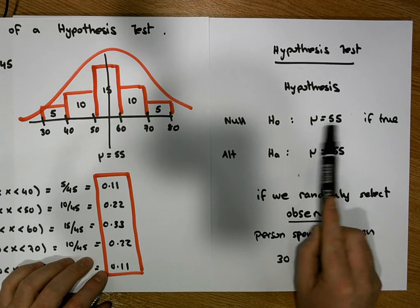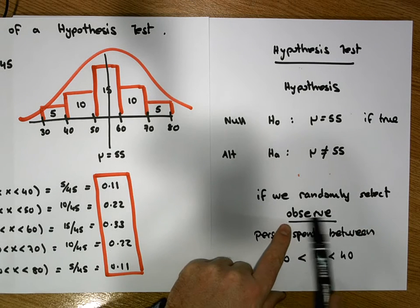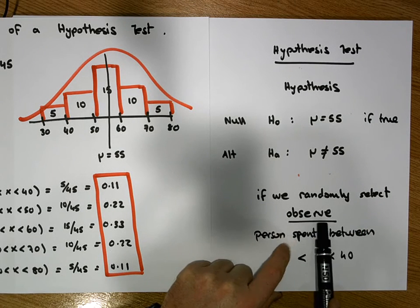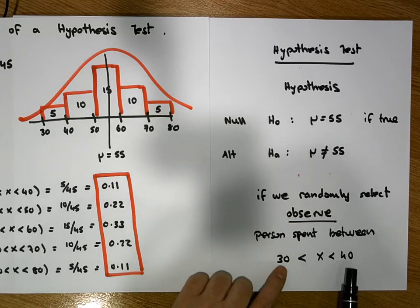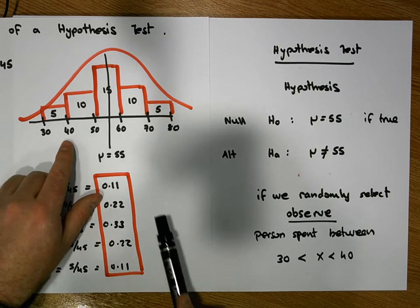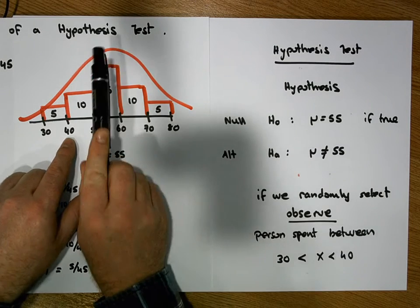If this was the case, well, then when I randomly select from the population, I wouldn't expect to find a value between 30 and 40. I'd more than likely expect to find a value between 40 and 70 if this was true.